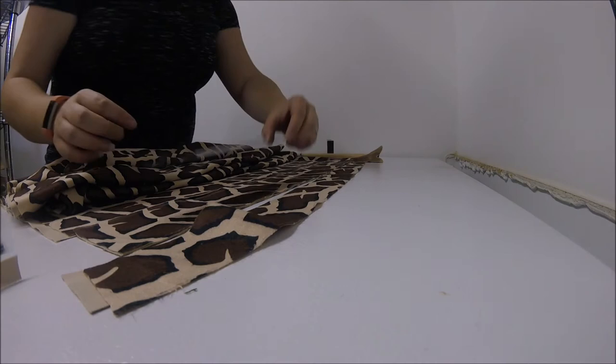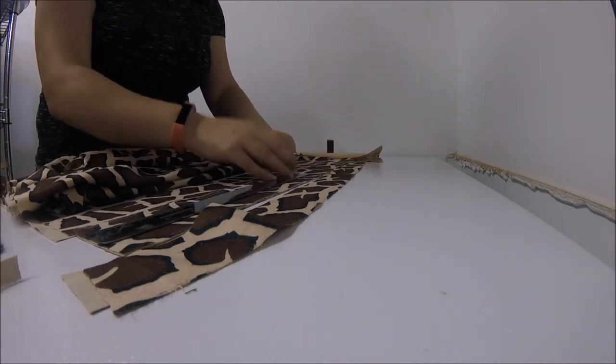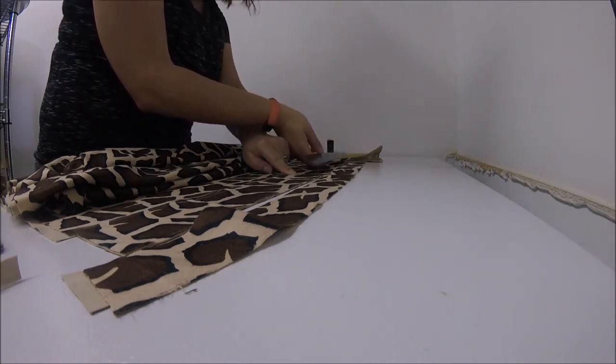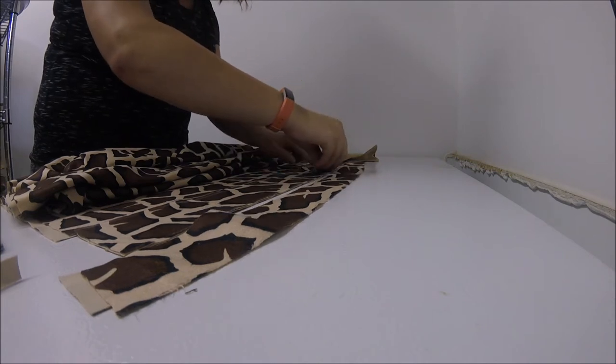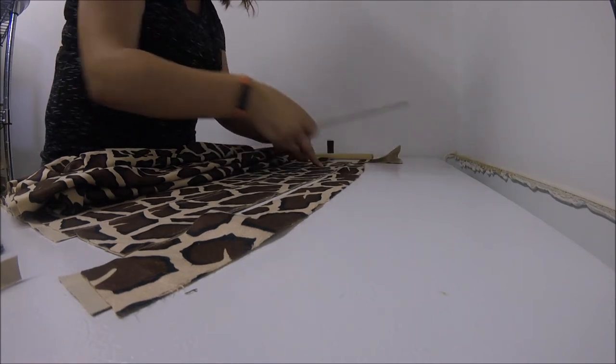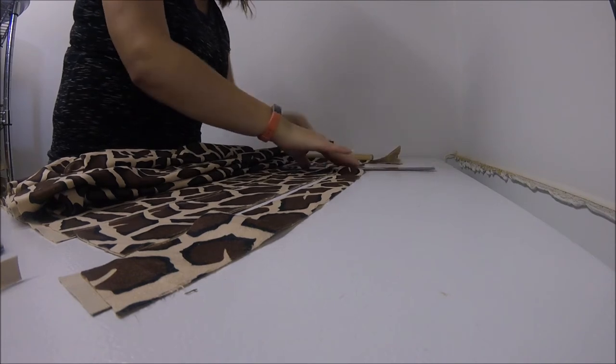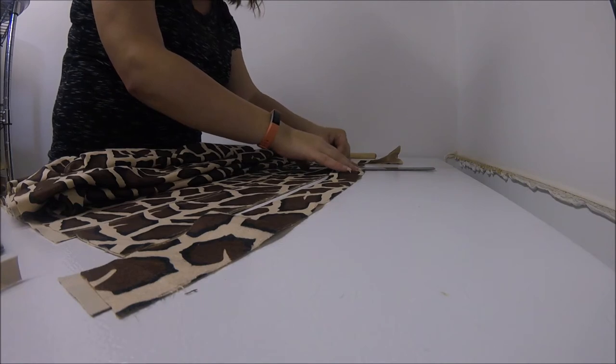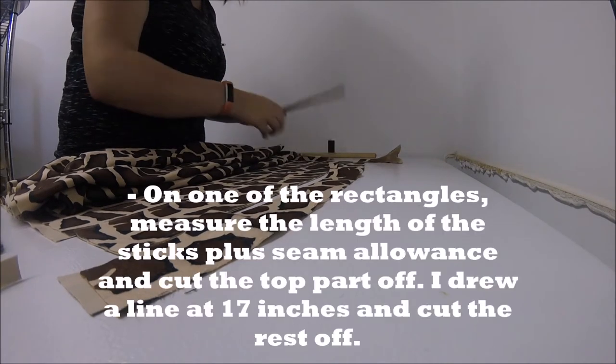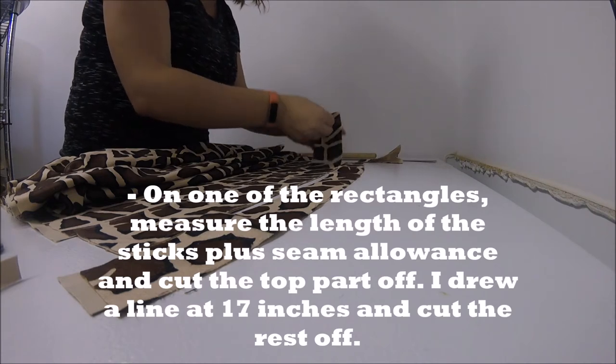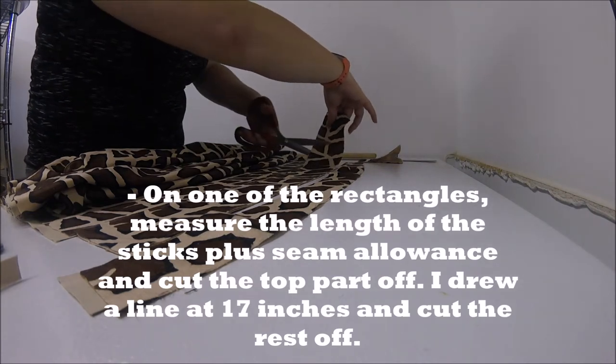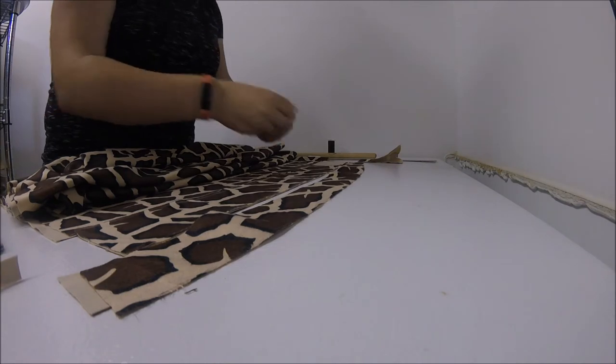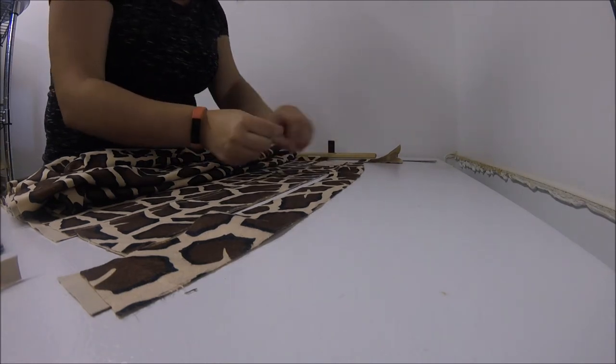So what we're going to do is we're going to measure 16 is here plus the seam allowance, and we're going to draw a line here. And on one of these flaps, because we've cut two, we're going to cut it at that line. There we go. Now save this piece because it is going to be used to hold the flap down.